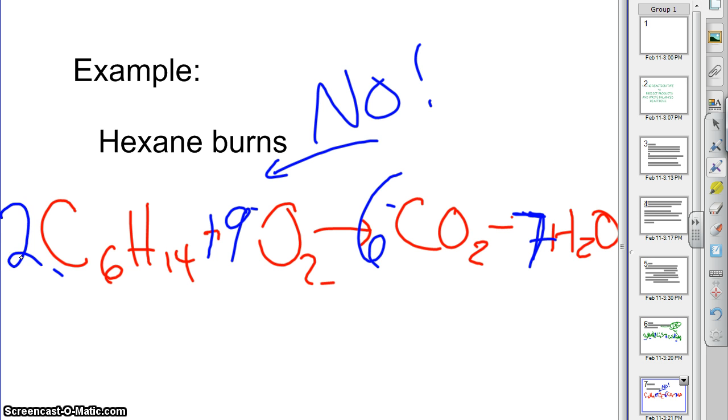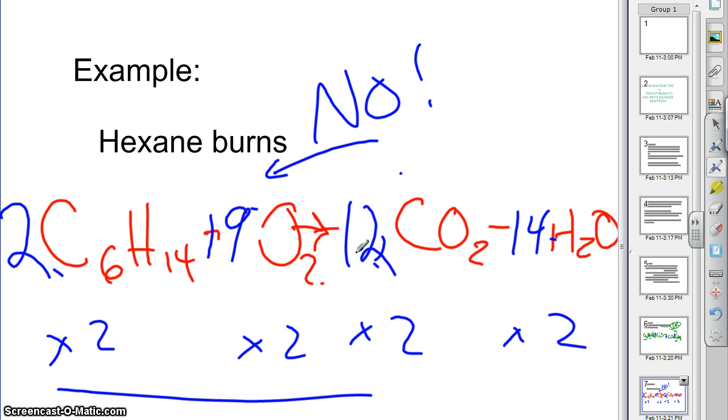This 1 becomes a 2, this 6 here becomes a 12. And this 7 becomes a 14. Well, why did I do all that? Well, because I just took everything times 2, and notice if it was balanced before and all I've done is double everything, it's still balanced. If we check it out now,